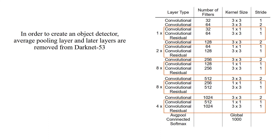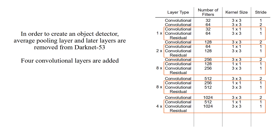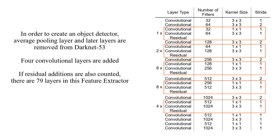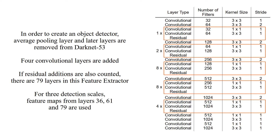In order to create an object detector, the average pooling layer and later layers are removed from Darknet-53. Four convolutional layers are added. If residual additions are also counted, there are 79 layers in this feature extractor. For 3 detection scales, feature maps from layers 36, 61, and 79 are used.